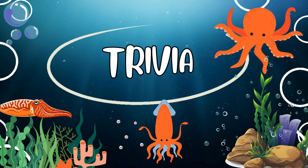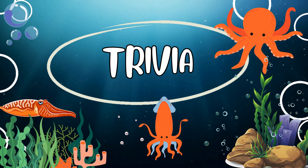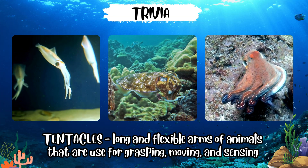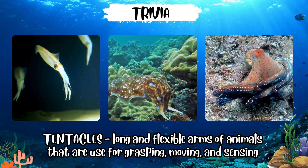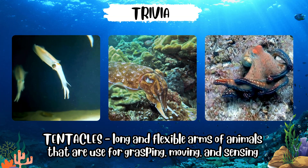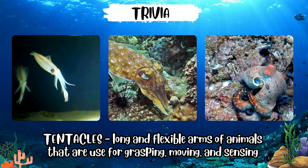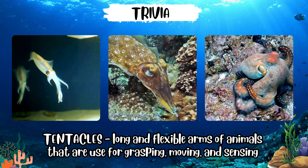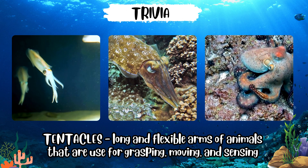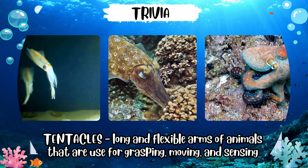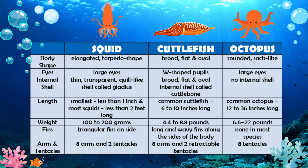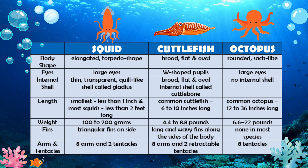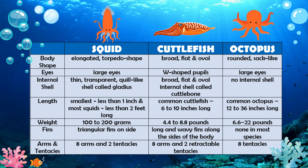It's trivia time! Tentacles are long and flexible arms of animals that are used for grasping, moving, and sensing. Shown is the summary of differences that we have identified among squid, cuttlefish, and octopus.